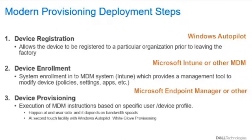Let's talk now about the steps to modern provisioning. Step one: device registration allows the device to be registered to a particular organization prior to leaving the OEM — the factory. This is what is called Windows Autopilot. It is just the registration of the device; we send the unique ID for that device to Microsoft servers.